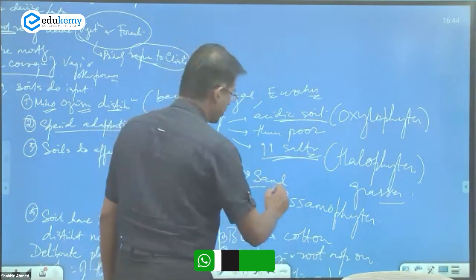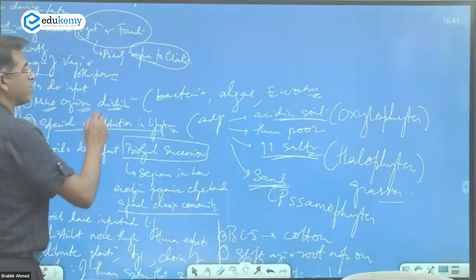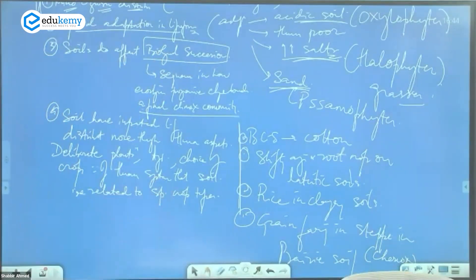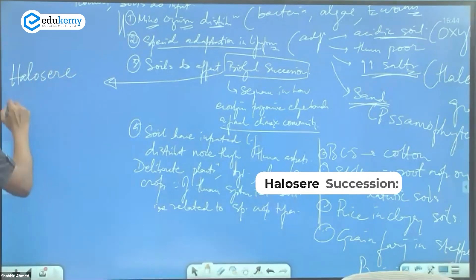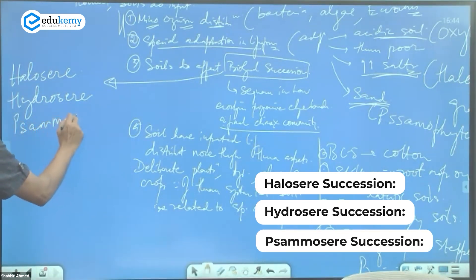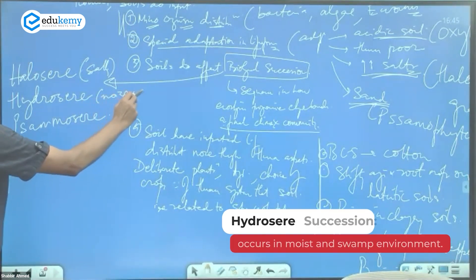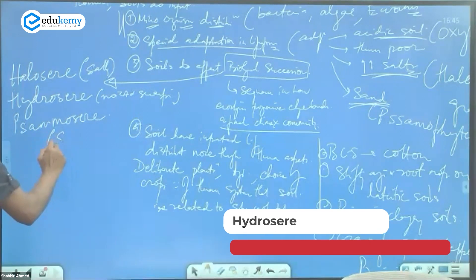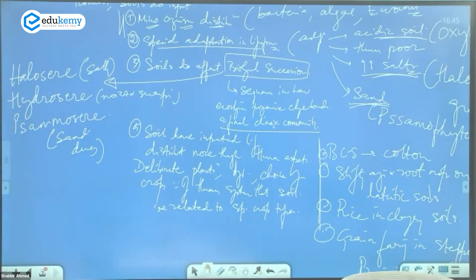So soil impacts include microorganisms like bacteria, algae, and earthworms; special adaptations for acidic, salt-rich, and sand-rich soils; and biological succession. Regarding biological succession, we have haloseres where soils are salty, hydroseres where soils are more moist and swampy, and succession on sand dunes. Soils affect biological successions in each of these.